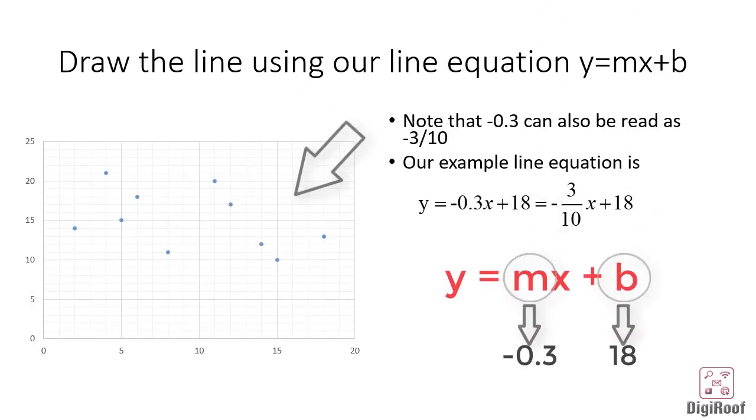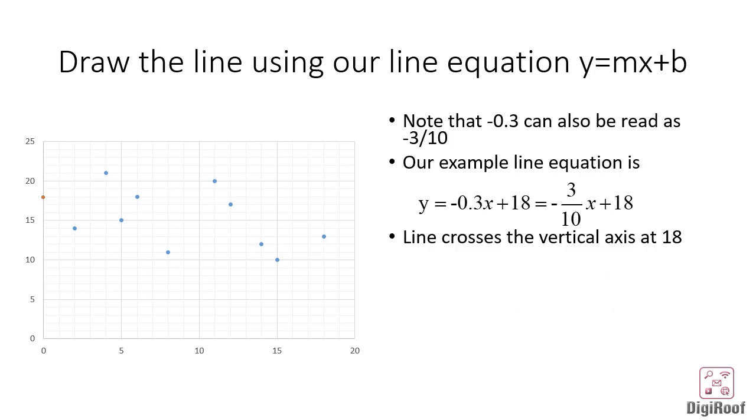This is the scatter plot for our data that has one predictor and one response variable. Our intercept we just calculated is 18. In other words, when the predictor variable is 0, the response variable is still 18. On our vertical axis at 18, we would make our first mark, which would be the starting point of our regression line, also known as the best fitting line.